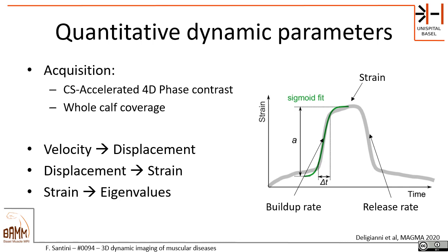From this three-dimensional velocity field we could calculate the displacement through simple integration, and from the displacement we could extract the strain tensor, which is a measure of the deformation of the muscle itself. The strain tensor was then diagonalized and the eigenvalues were extracted. In this presentation we will focus on the first eigenvalue of the strain, as it turned out to be the most interesting to analyze.